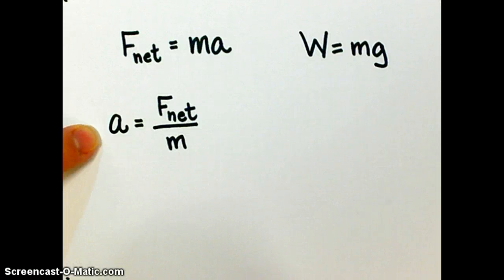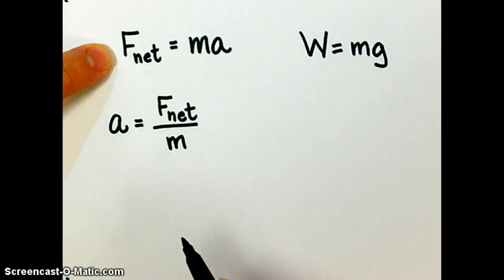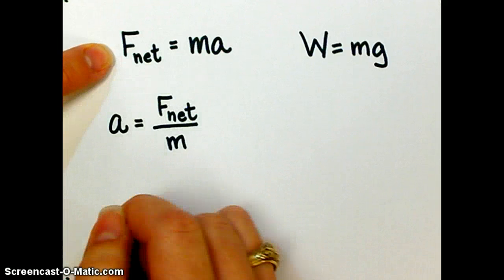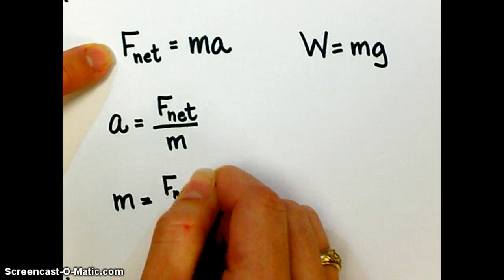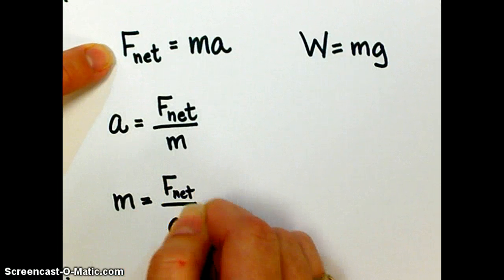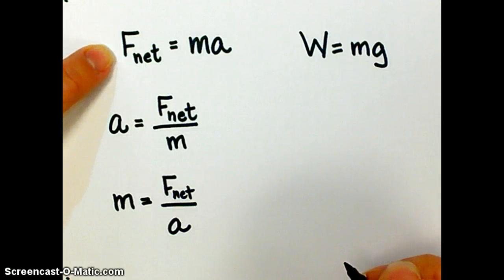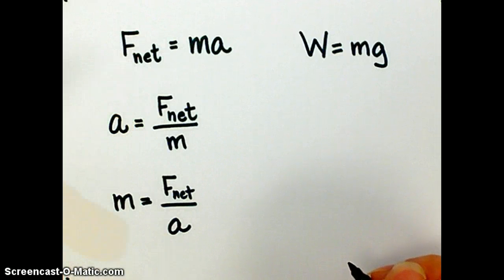But what if I need to solve for mass? Well, I take this original equation, and instead of dividing both sides by mass like I did to get this, I'm going to divide both sides by acceleration. So mass is going to be net force divided by acceleration. And sometimes in the homework questions, they just state force. They don't say that it's net force. So unless they tell you specifically that it's not net force, just assume that they mean net force. Does everyone understand that?